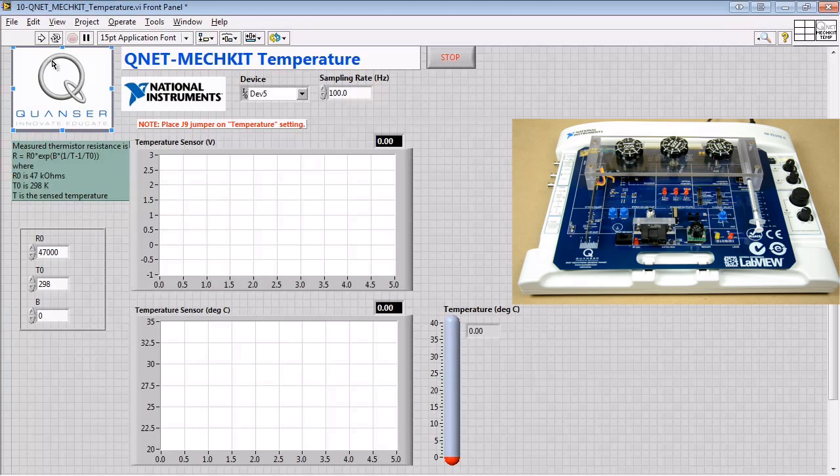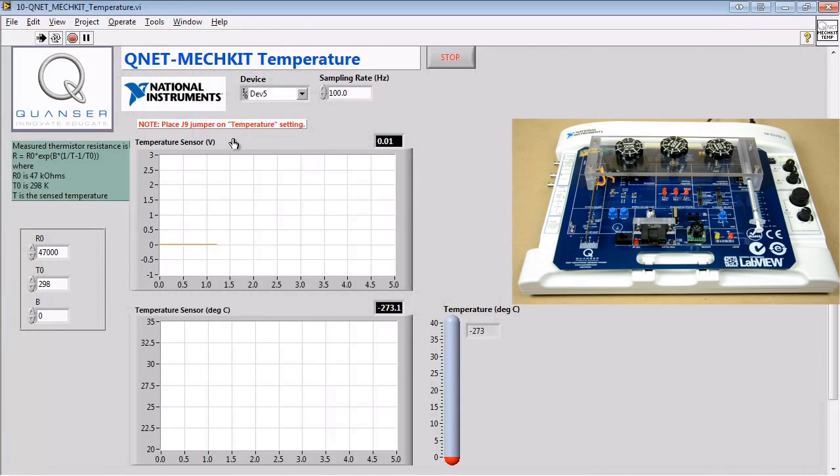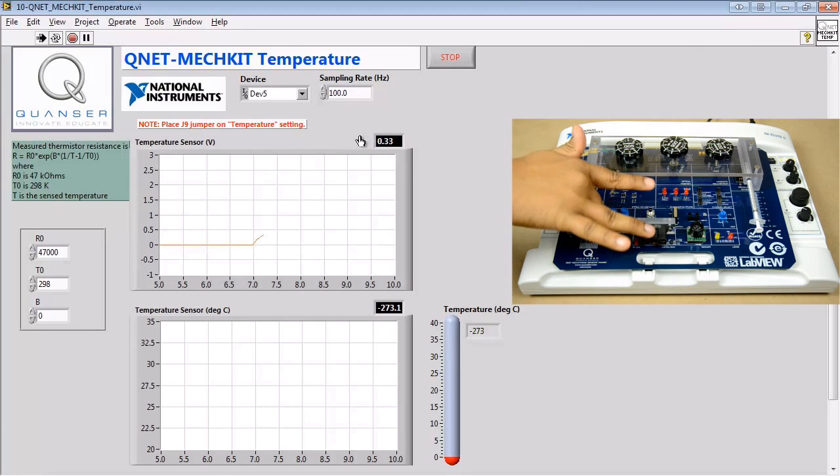In this experiment, we'll investigate the voltage reading of the temperature sensor at room temperature. Then, we'll heat the temperature sensor with our finger and record the voltage measured by the sensor at this elevated temperature.